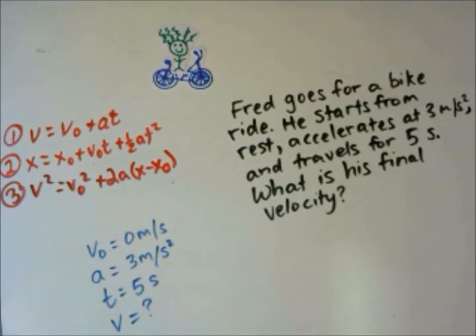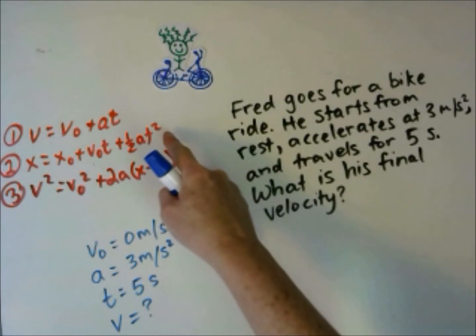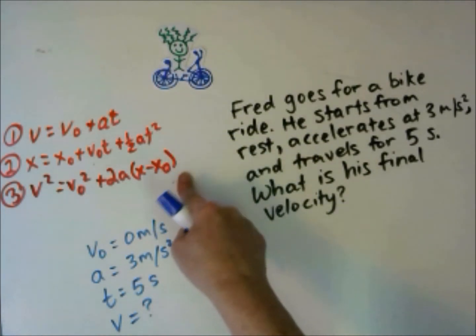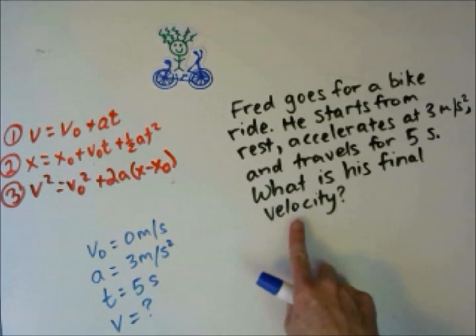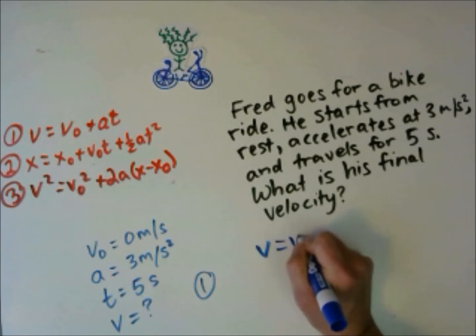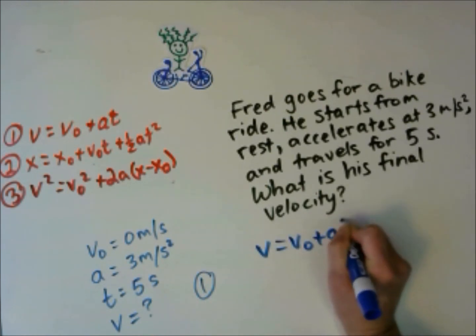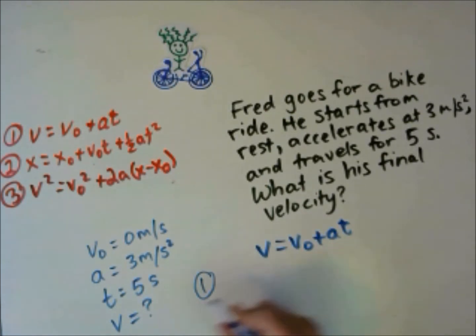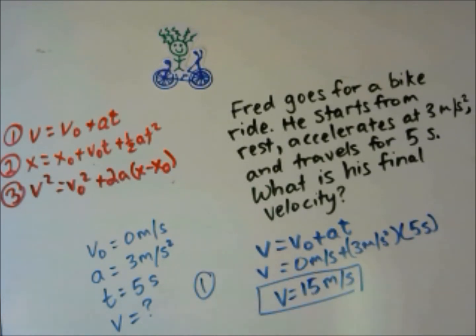Looking at these equations, which is the best one to use? Equations 2 and 3 require the use of position, which isn't given to us and isn't asked for, so they're not the best equations. We're going to choose equation 1. Plug in the values we know to find v. His final velocity is 15 meters per second.